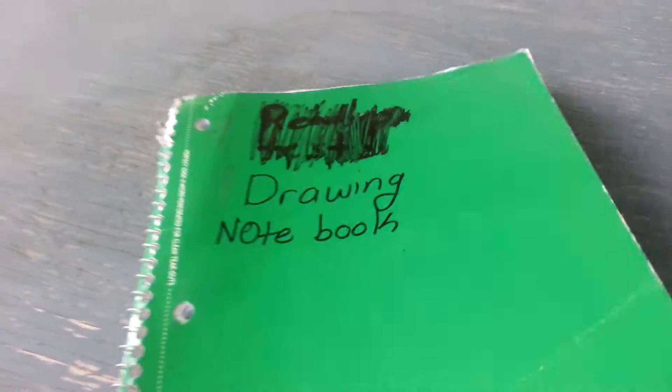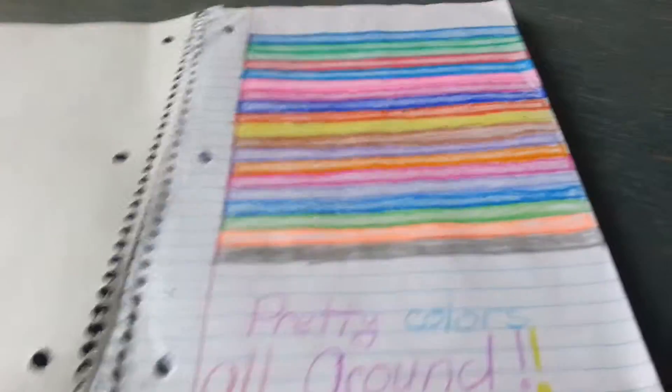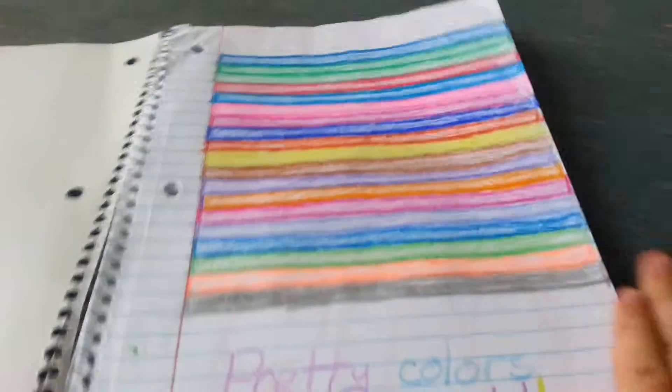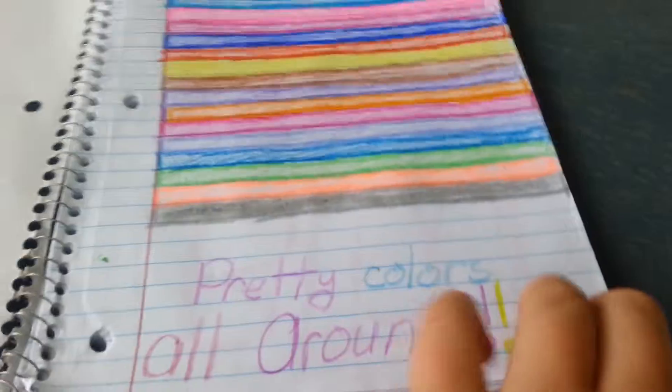So what I have here is my drawing notebook, and first what I have on the first page is, well, I have a 96 crayon pack, so I just put some colors on this notebook piece of paper because I was bored. And then at the bottom I just said pretty colors all around.